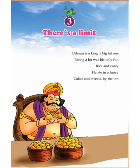Now look at this picture. What can you see? There is a king sitting on a chair and he is eating some mangoes. You can see there are two vessels with mangoes in them. The king's name is Udharan and he is a big fat one.